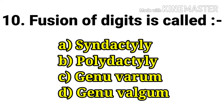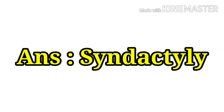The next question: fusion of digits is called — options are syndactyly, polydactyly, genu varum, and genu valgum. The answer is syndactyly.